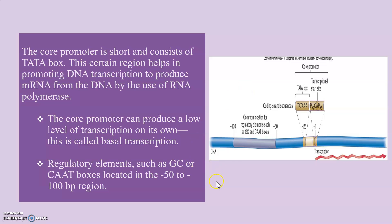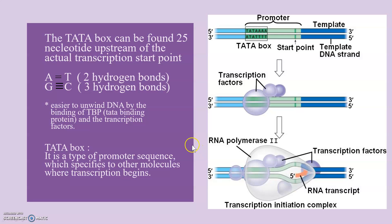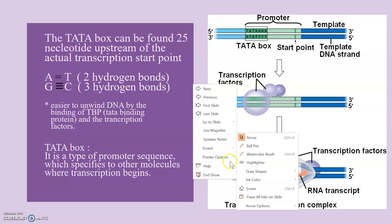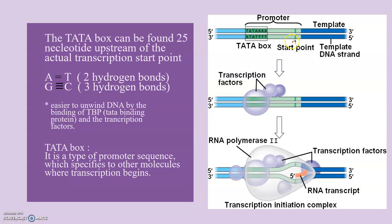Regulatory elements such as GC and CAAT boxes are located in the 50 to 100 BP region. The TATA box can be found 25 nucleotides upstream of the actual transcription start point. What is meant by upstream is from the start point towards the TATA box. The direction away from the TATA box is called the downstream.